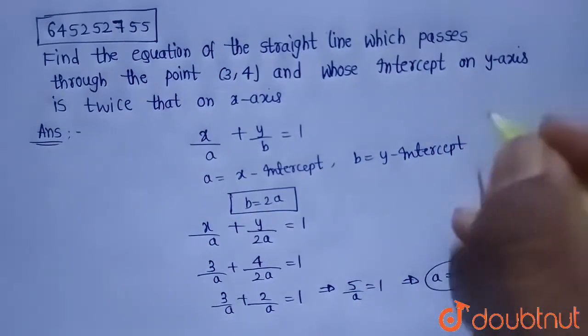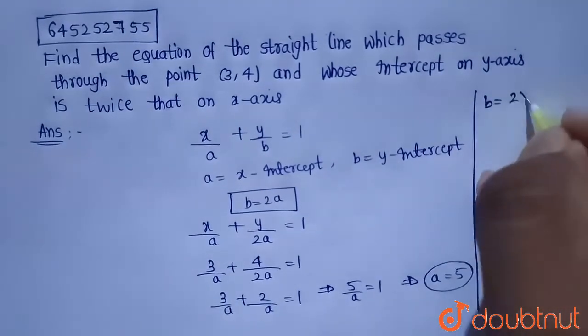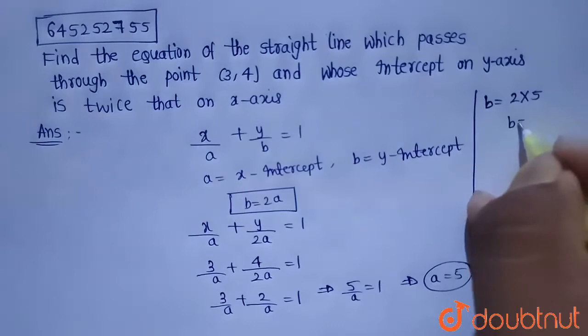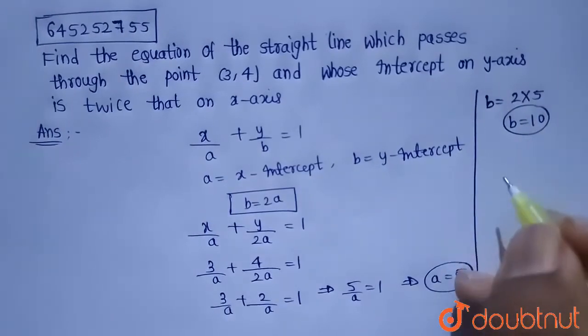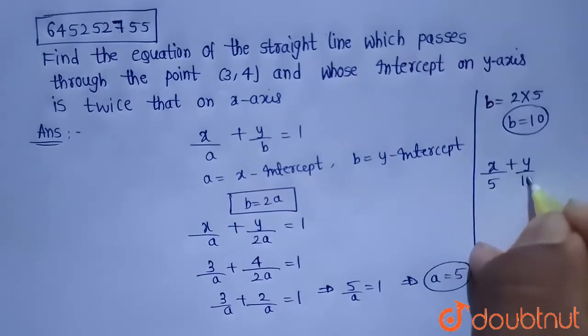So, we got a = 5 and given b = 2a. So, from this b equals 2 times 5. That is b equals 10. So, the equation of the line will be x/5 + y/10 = 1.